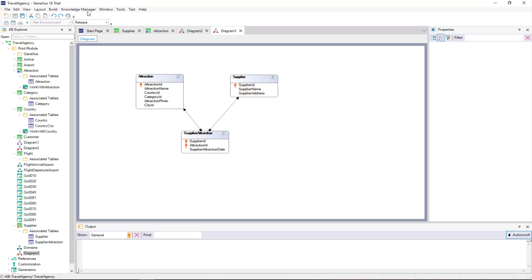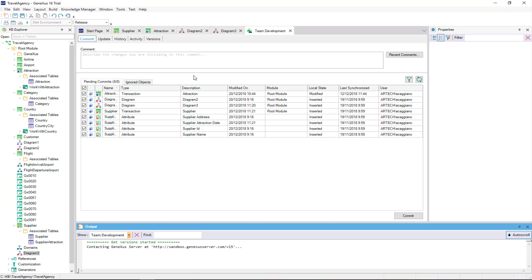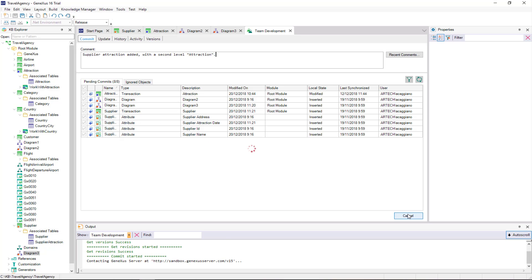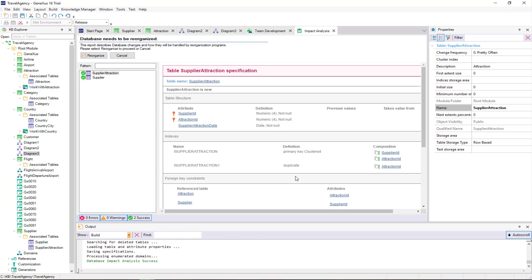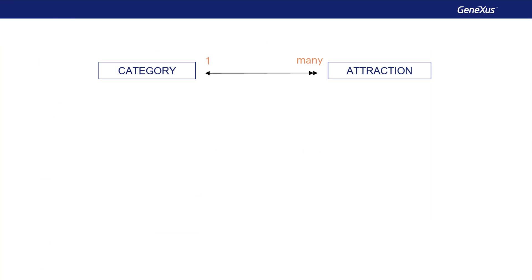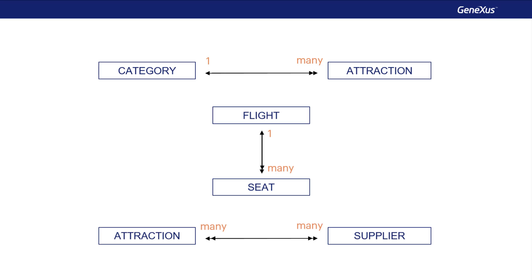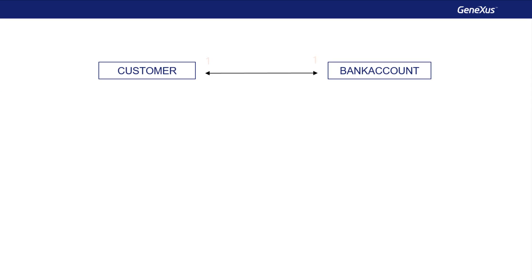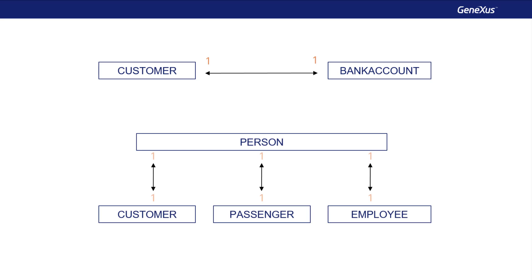Finally, let's update our KB and GeneXus Server, and we reorganize it to have the Tables created. So far, we've seen that using Transactions and their Attributes, we can represent different relationships between the Actors of our Reality — for example, when the Travel Agency needs to associate with each Customer the Bank Account opened to pay for the Services Hired. We also mentioned one-to-one Relationships and Subtypes as an example of Specialization, when an Entity is a particular case of another. Now let's move on to the following topic.